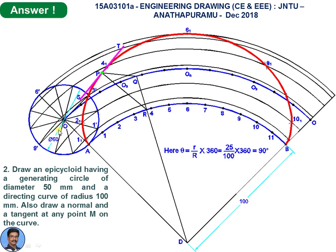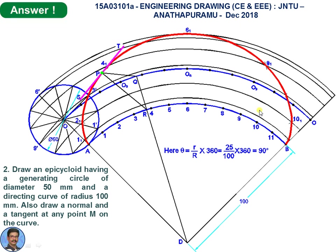Similarly for point 2-1, with O2 as center and 25 mm as radius, cut an arc on the arc passing through 2'. Follow the same procedure for points 3-1, 4-1, 5-1, 6-1 and so on. Join all the points by freehand — that is the epicycloid. The first part is complete.